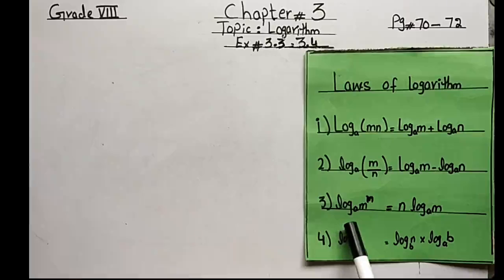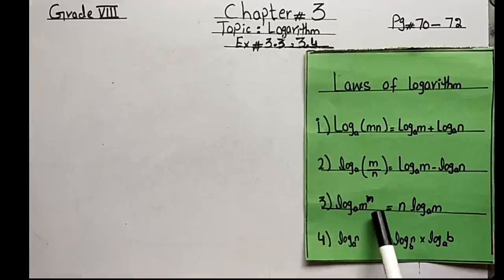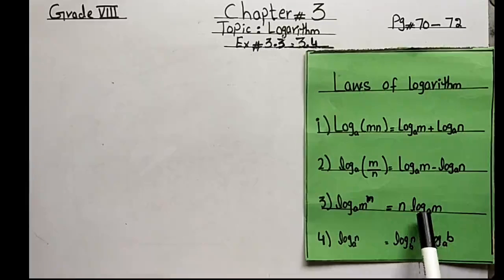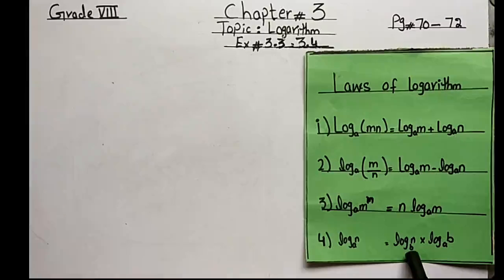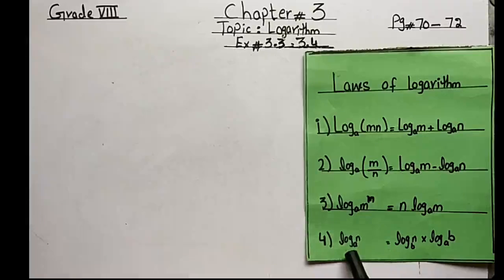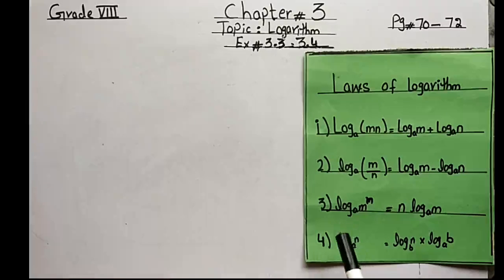The third law is log base E of M raised to power N. When we apply the log on this type of number, the power will be written in front of the variable after applying the log: N·log_E(M). These are the four main laws we will use.